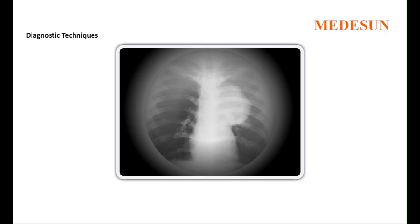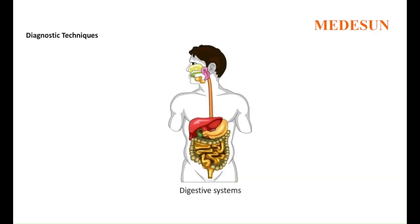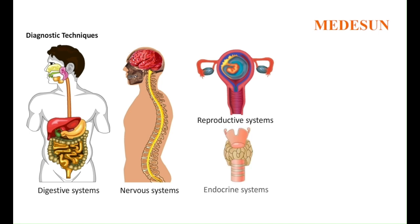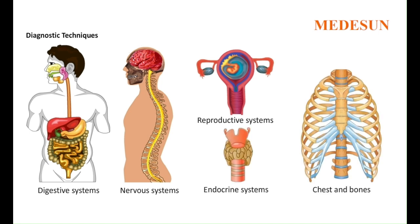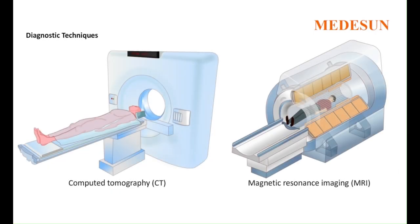Diagnostic techniques: X-rays are used in many ways for detecting pathological conditions. The most common use of the diagnostic X-ray is to locate dental cavities in teeth. Other areas of examination include the digestive, nervous, reproductive and endocrine systems, and the chest and bones. The special diagnostic X-ray techniques are Computed Tomography (CT) and Magnetic Resonance Imaging (MRI).